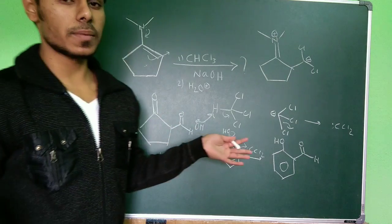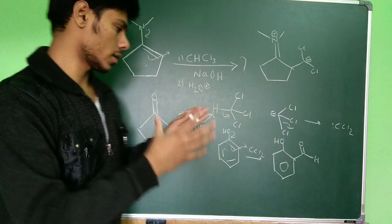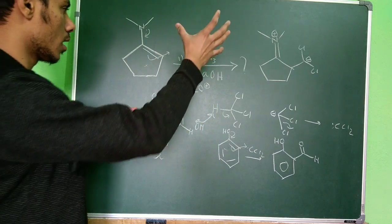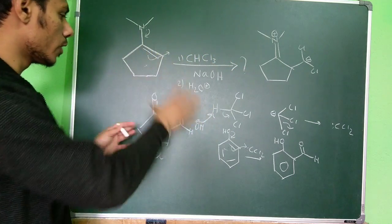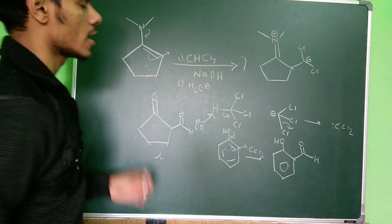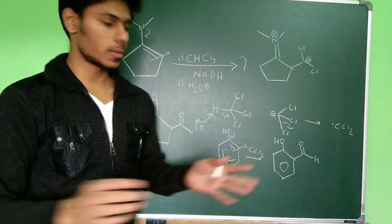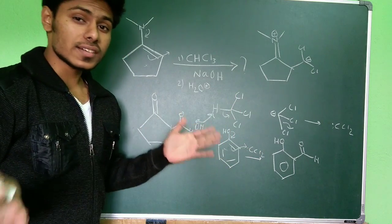Because this Reimer-Tiemann reaction is so common that it's just stuck in our mind. When we treat this dichlorocarbene with phenol we get this aldehyde. So the same logic applies here and you will get this.